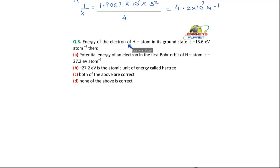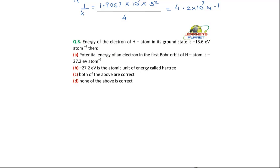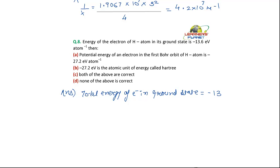The energy of the electron of a hydrogen atom in its ground state is minus 13.6 electron volts per atom. What energy is this - kinetic, potential, or total? This energy is the total energy of the electron in the ground state, equal to minus 13.6 electron volts.